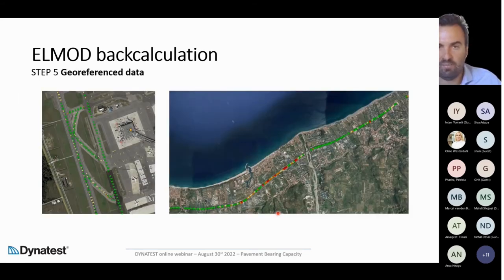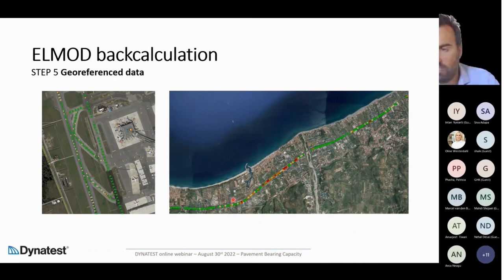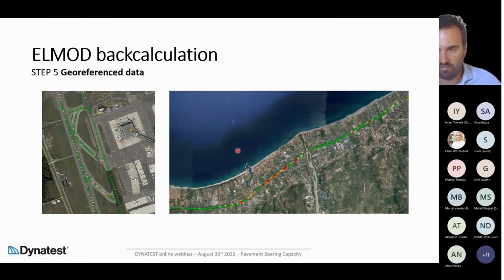All data can be plotted on Google Earth or as shapefiles, combining colored maps and pop-outs that include important information for evaluation, providing more usable data for users. This is shown for both an airport case and a road case, and it is very useful at network or project level to immediately identify critical areas.